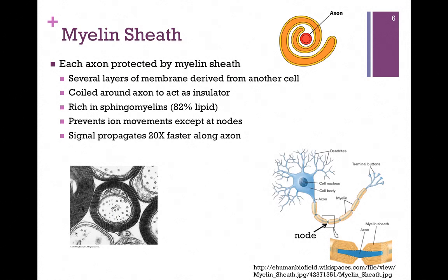Let's look at the myelin sheath. These Schwann cells are highly concentrated in sphingomyelins — that's why it's called a myelin sheath — and they are about 82% lipid. They wrap around the axon and act as an insulator, coiled in multiple layers creating a very thick layer of lipids, which is strongly insulated against charge. This prevents ion movements except in areas where we don't have the myelin sheaths. The space between one myelin sheath and the next is called the nodes of Ranvier, and the movement of ions can only take place at those nodes.